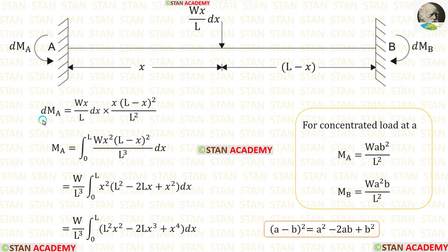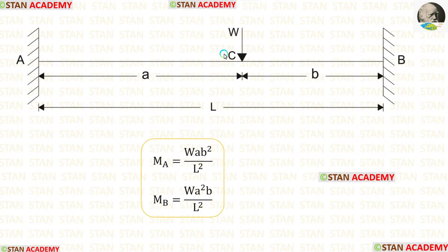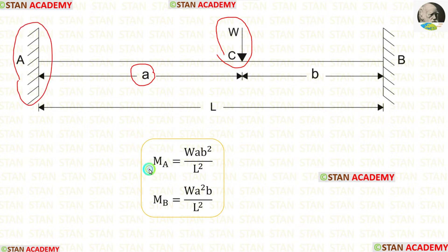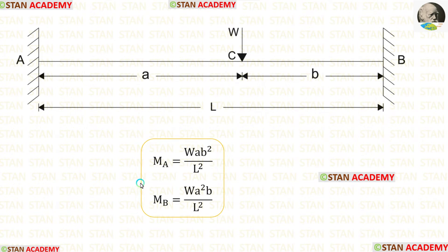Let us derive the formula for DMA. In a fixed beam, when a concentrated load W acts at a distance A from the left side, we know the formulas for the fixed end moments: MA is WAB² upon L² and MB is WA²B upon L².